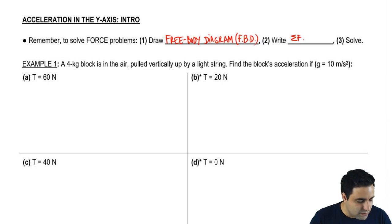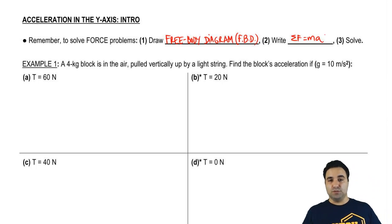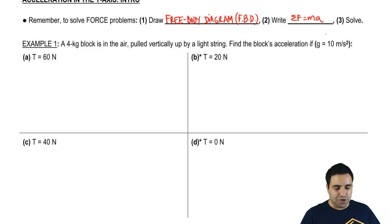Then we're going to write that the sum of all forces equals Ma, and we're going to solve the problem. If you have multiple objects, we just do this multiple times, one for each object.